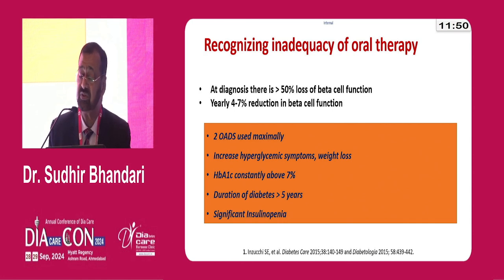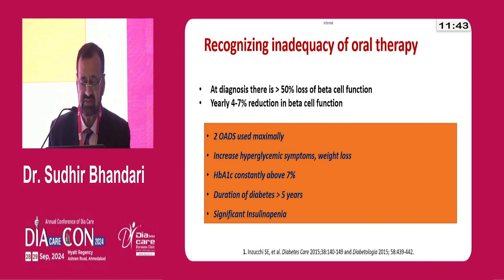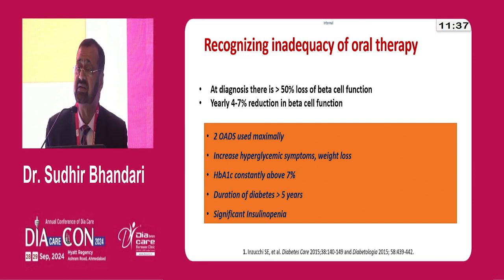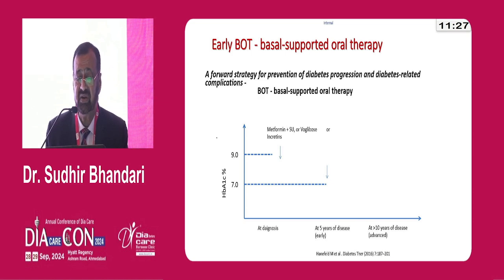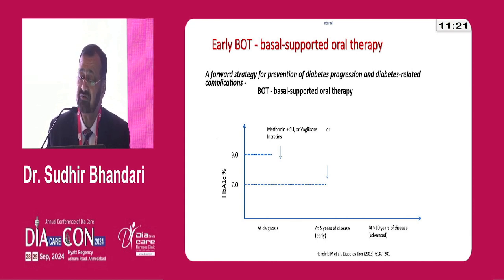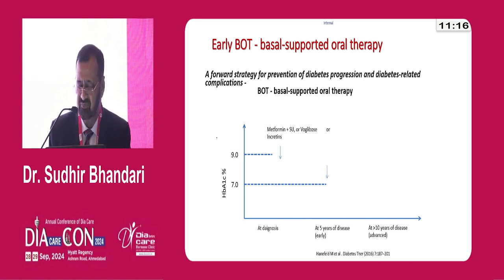Increased hyperglycemia symptoms with weight loss, HbA1c constantly above 7, and duration of diabetes more than 5 years — probably we need to pick up the insulin-deficient stage of the patient. That becomes the point of initiation of basal insulin and building up the doses. Early basal-supported oral therapy is one of the very important strategies for prevention of diabetic progression and diabetes-related complications — supporting oral therapy with the introduction of basal insulin.